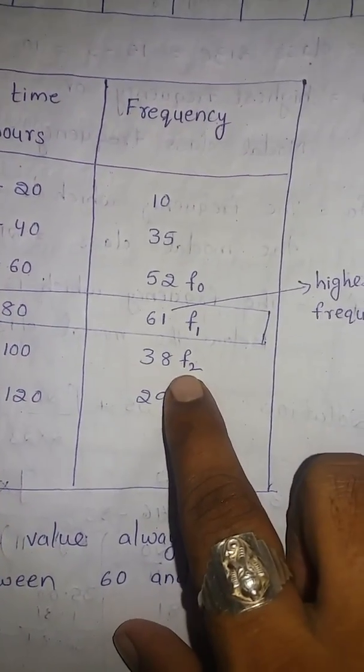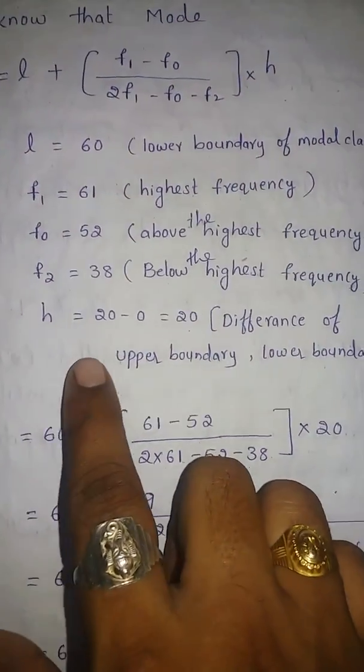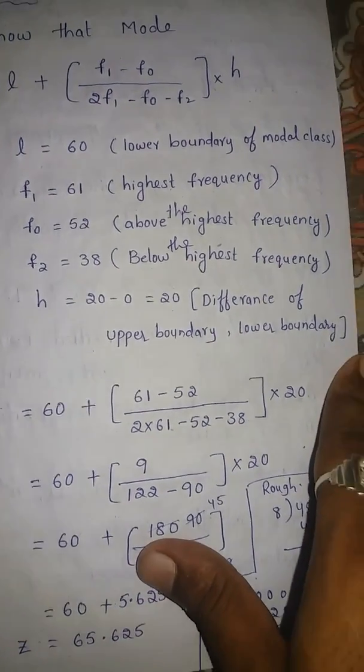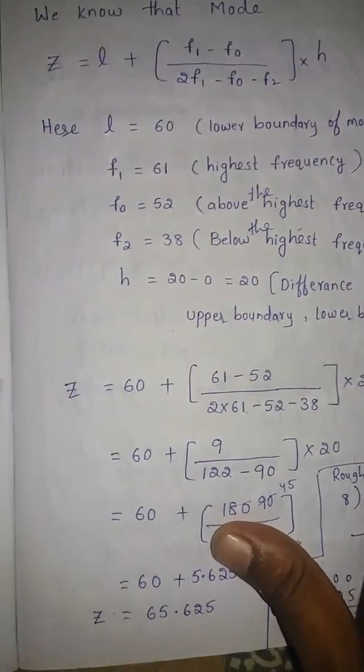F2 is 38 below the highest frequency value. That is F2 is 38. H is nothing but class size, 20 minus 0, upper boundary minus lower boundary, difference of upper boundary and lower boundary you will get the class size.